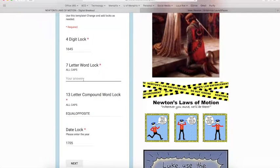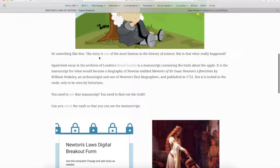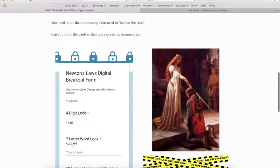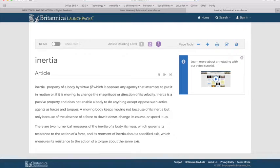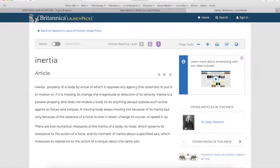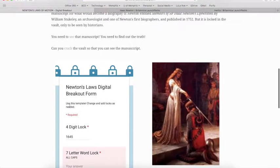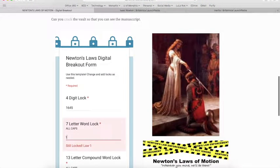The last one for the seven letter word lock is it found through the word one and if they start typing here it'll say law one. So trying to get them to make that connection that they're looking for the word one. And if they look here it's an article about inertia and what inertia is and this would be the actual answer is inertia.